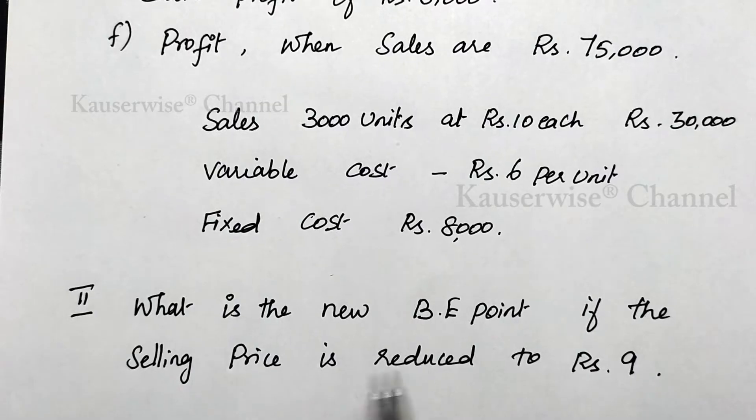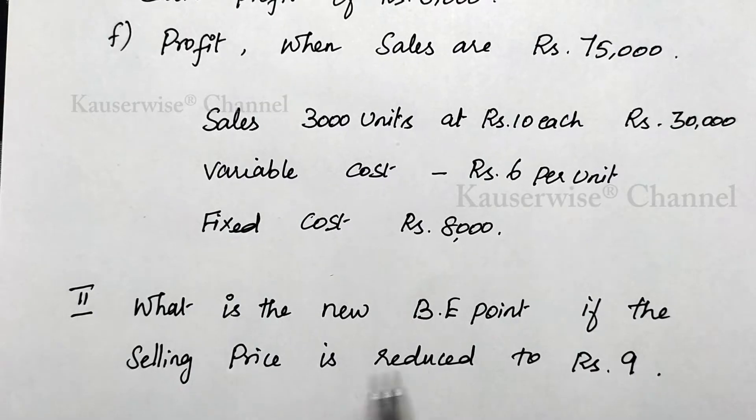Now we are going to see the solution. In order to find out all these components, first we need to prepare the marginal costing statement. As I told in the previous video, marginal costing statement is the important base calculation for all these components. The marginal costing statement is: sales minus variable cost equals contribution, and contribution minus fixed cost gives either profit or loss.